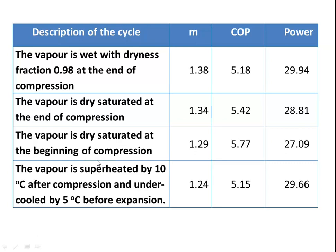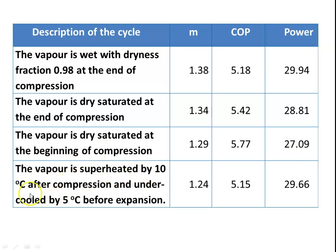Comparing the four cycles: Case 2 (wet compression, x=0.98) gives m=1.38, COP=5.18, Power=29.94 kW. As we move to dry saturated (Case 3), mass reduces, COP increases, and power decreases. Case 4 (superheated + undercooled) gives the lowest mass (1.24 kg/s) but COP decreases and power increases, as the compressor has to do more work.